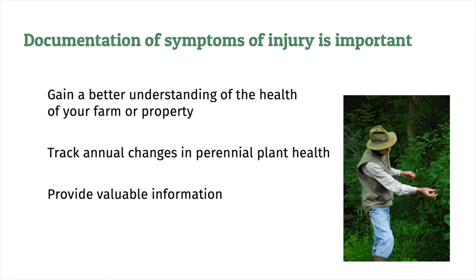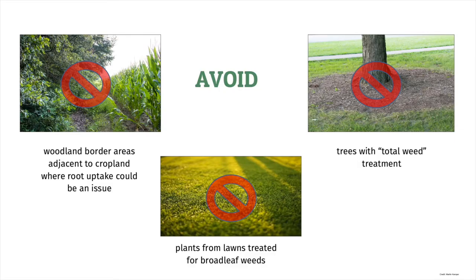It is important to document symptoms of herbicide injury. Documenting symptoms helps you gain a better understanding of the health of your farm or property. It also helps you track annual changes in perennial plant health, and it provides valuable information to organizations and agencies that monitor or record symptoms associated with herbicide drift. There are certain areas you should avoid when documenting symptoms on your property. Avoid woodland border areas directly adjacent to cropland, where root uptake of herbicides could be a reason for symptoms. Also avoid monitoring trees with total weed treatment around the base, and plants from areas with turf that has been treated for broadleaf weeds.